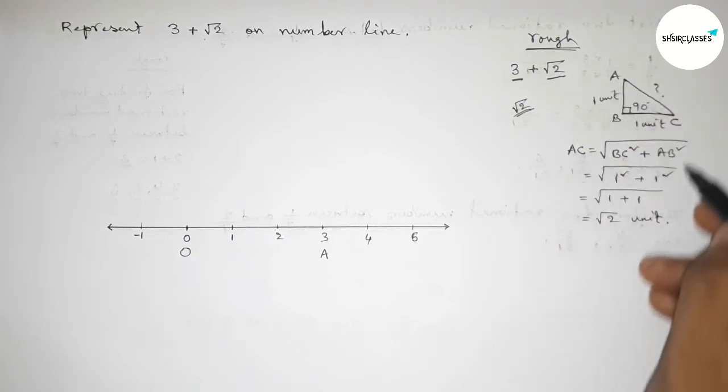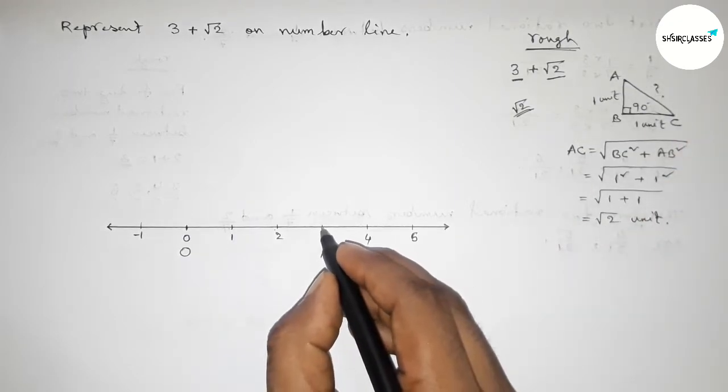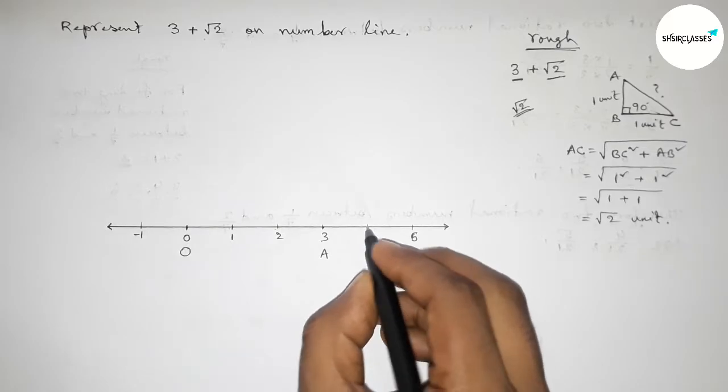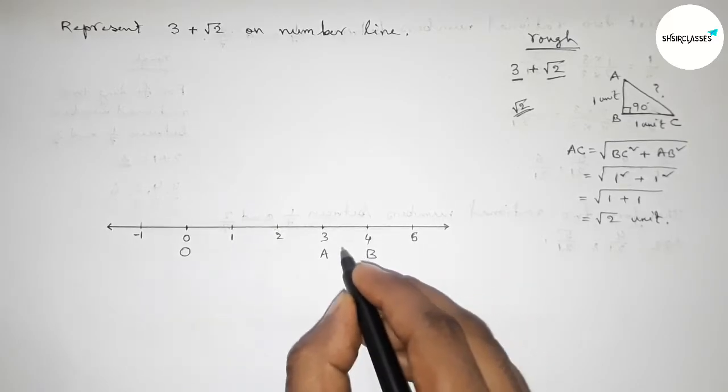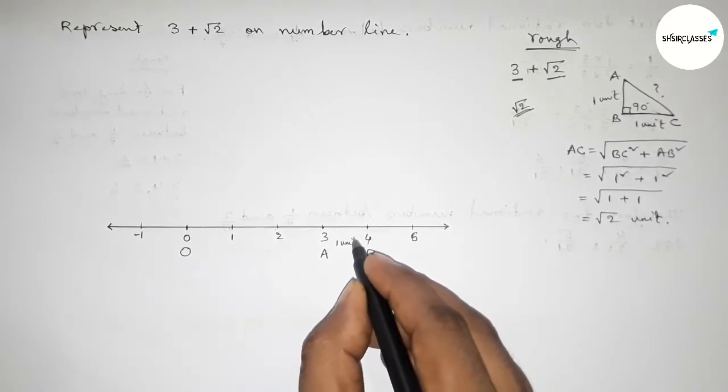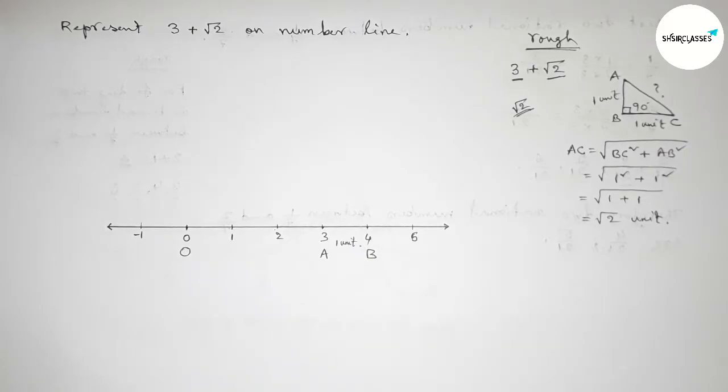Applying this concept here from 3 to 4, between 3 to 4 this is 1 unit length, and take point B here.